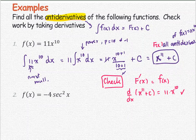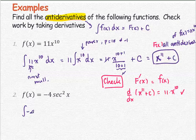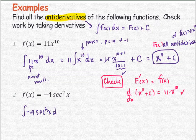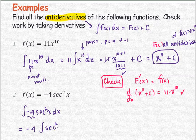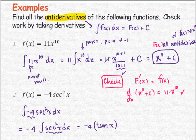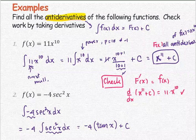Next example: f(x) equals negative 4 multiplied by secant squared of x. The antiderivative is the indefinite integral of negative 4 times secant squared x with respect to x. Using the constant multiple rule, take negative 4 outside the integral. Ask yourself: what function has a derivative of secant squared? The answer is tangent, so the antiderivative is negative 4 tangent(x) plus C.